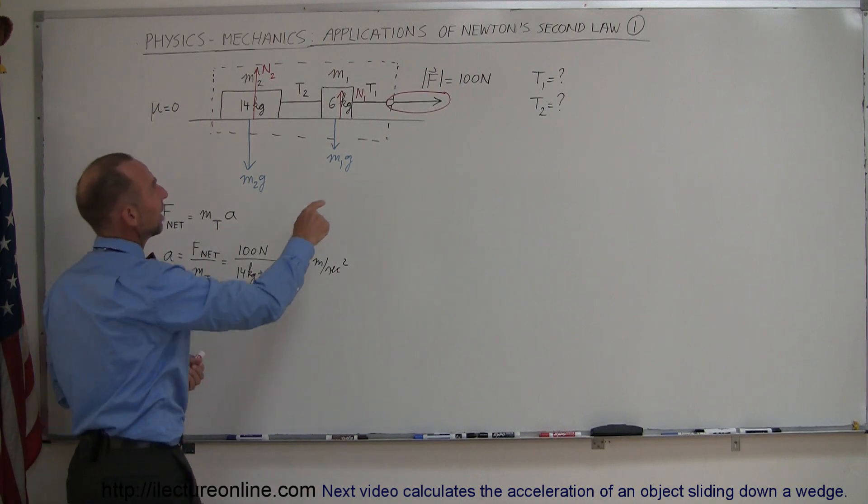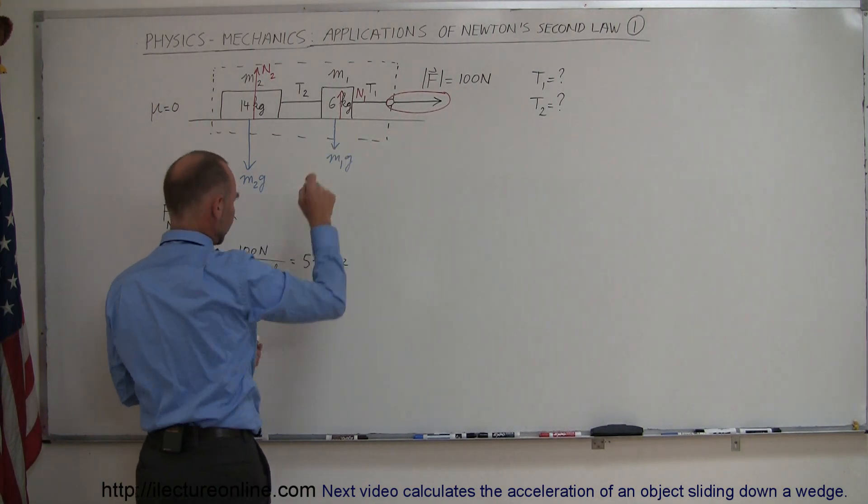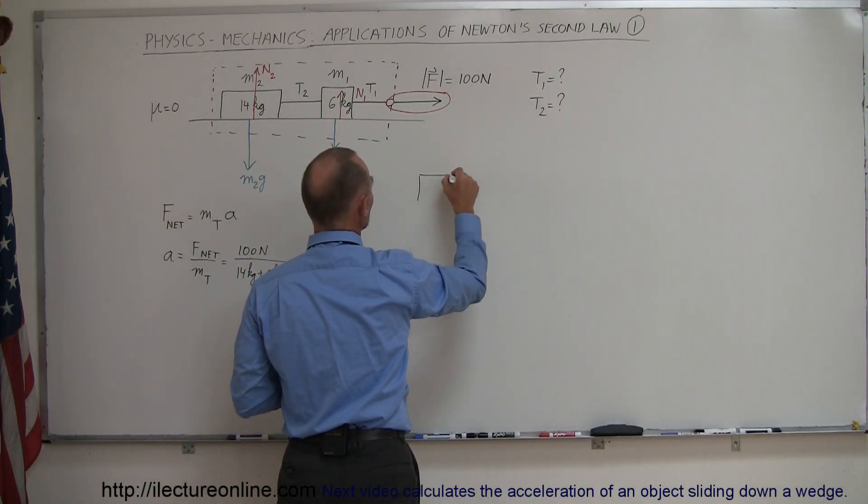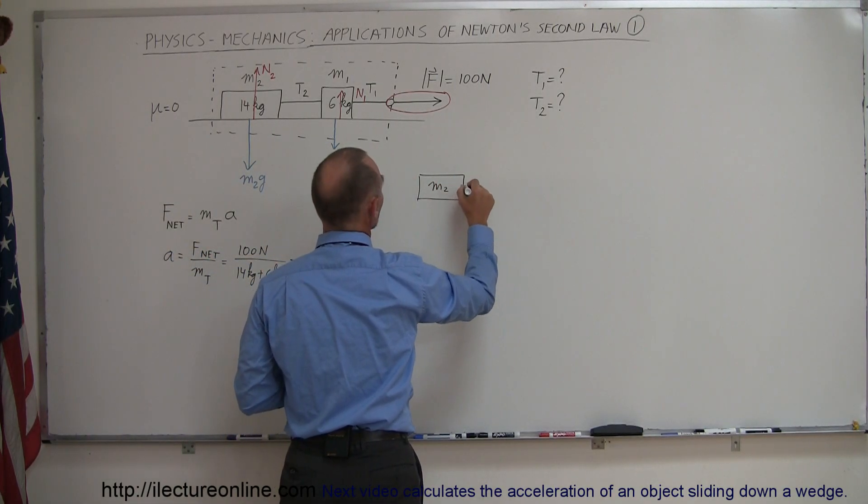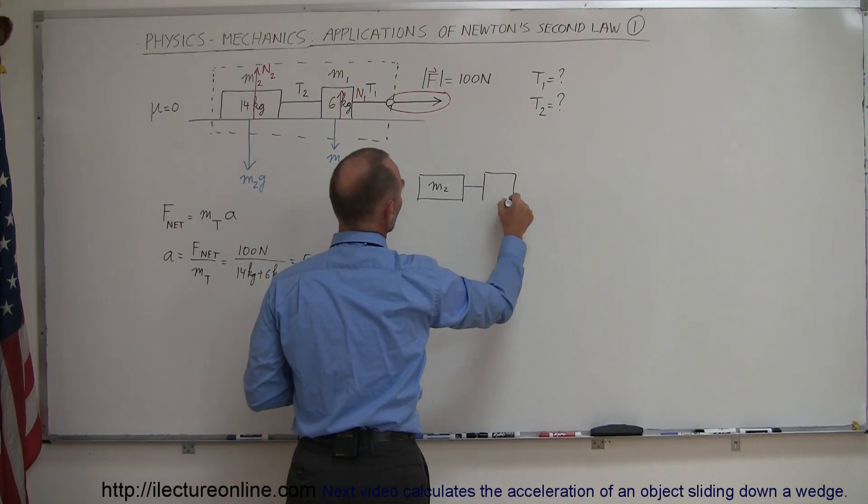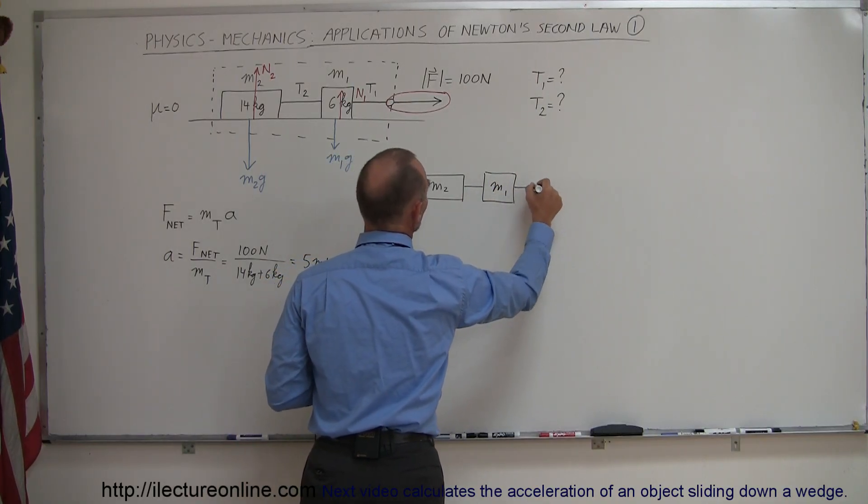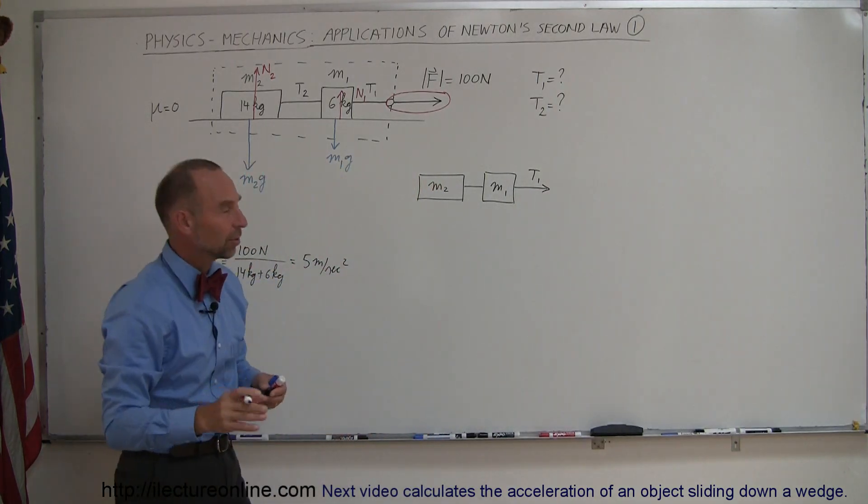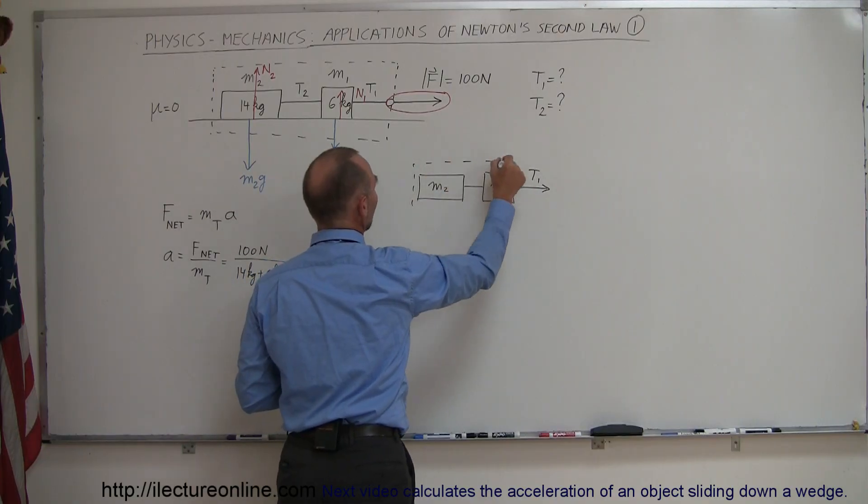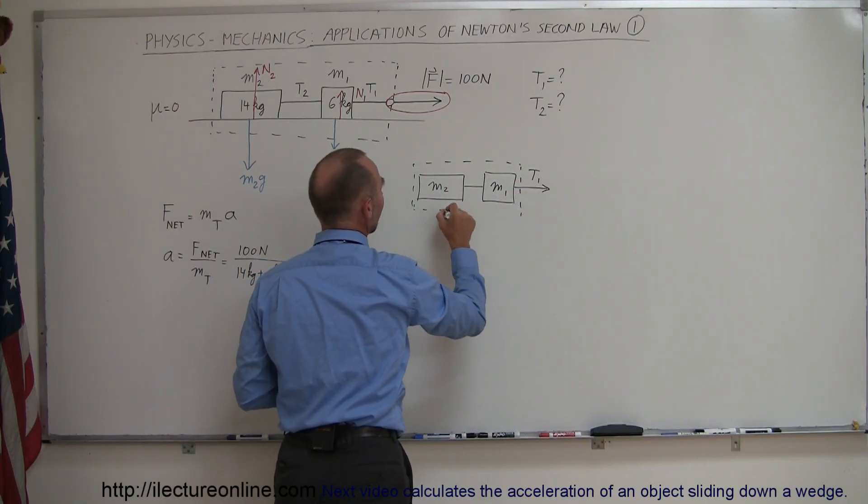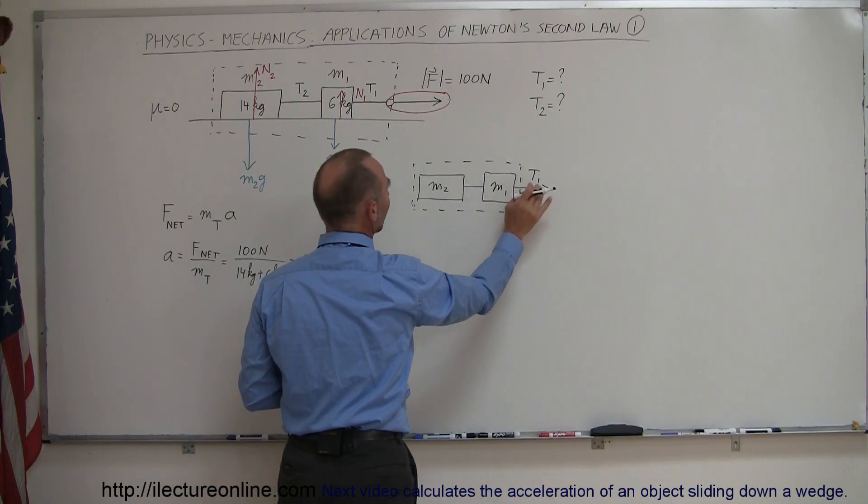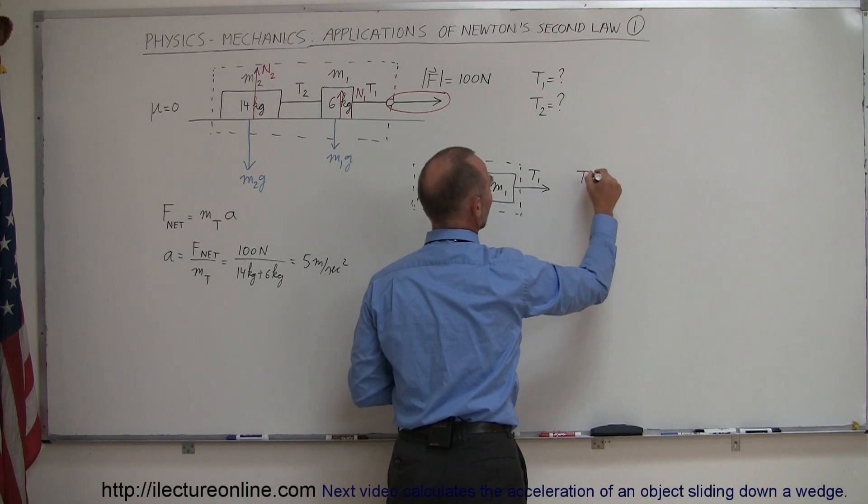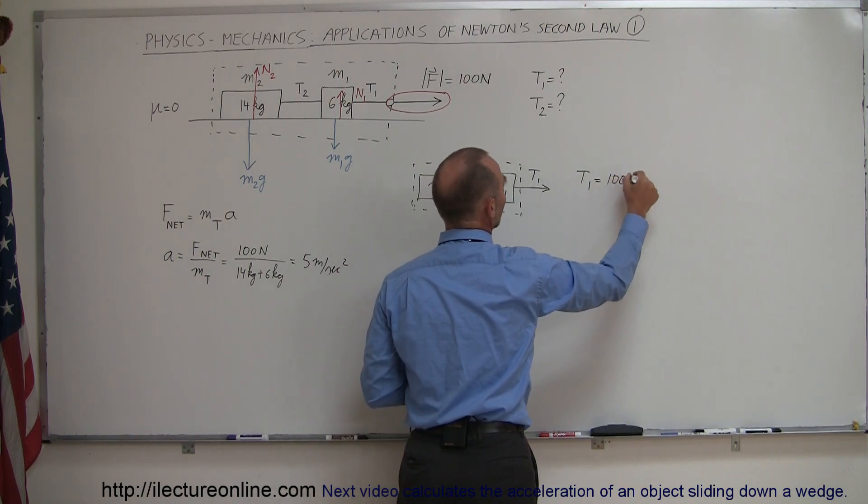Now the next thing we want to do is find the tension here, tension one. If we draw a free body diagram of the situation, we have these two masses right here. We have M2 connected with a string to M1, and then that's connected to a string right here. We're trying to find the tension over here. We have a similar situation. If we consider this whole system, we can see that the tension in one is accelerating the whole system, so the tension in one has to equal the 100 Newton force right here. We can say that tension one equals 100 Newton.